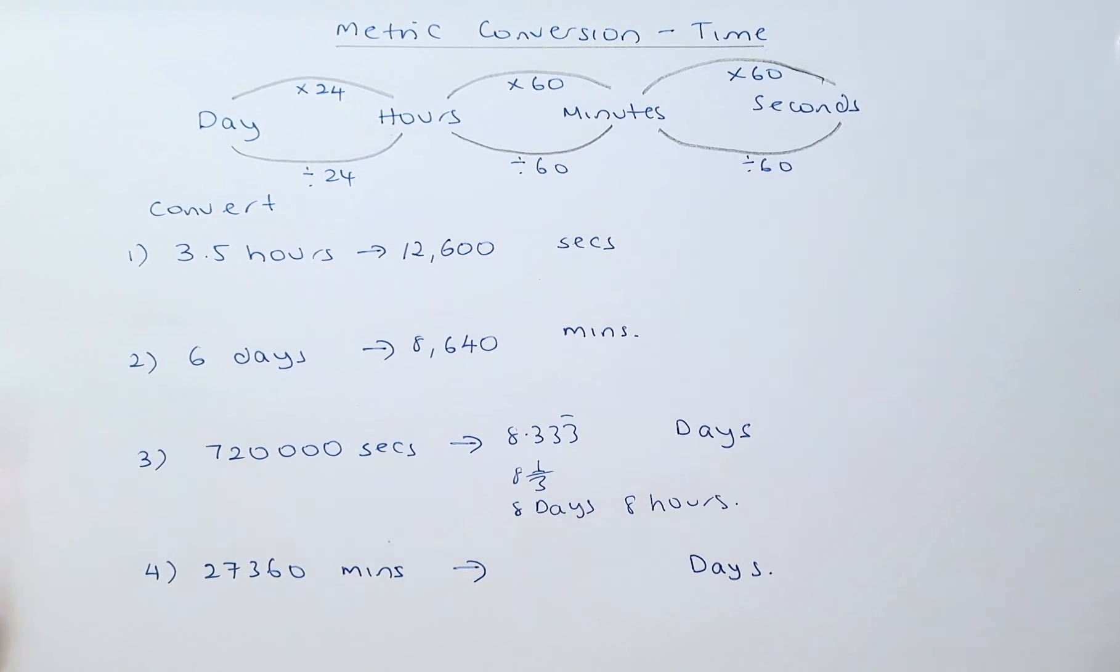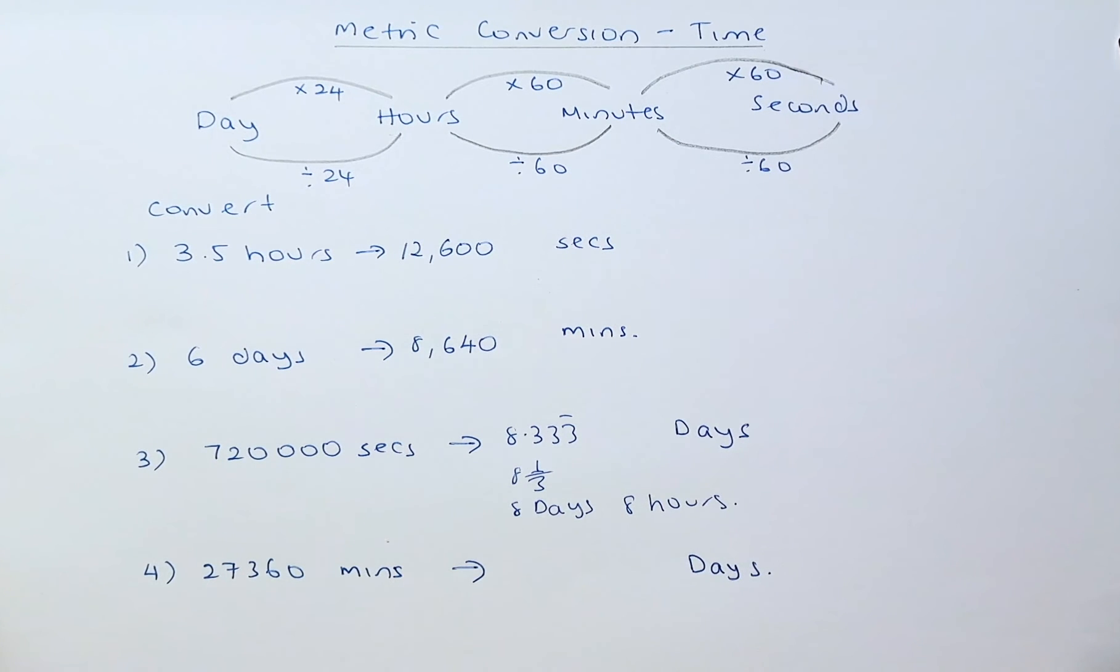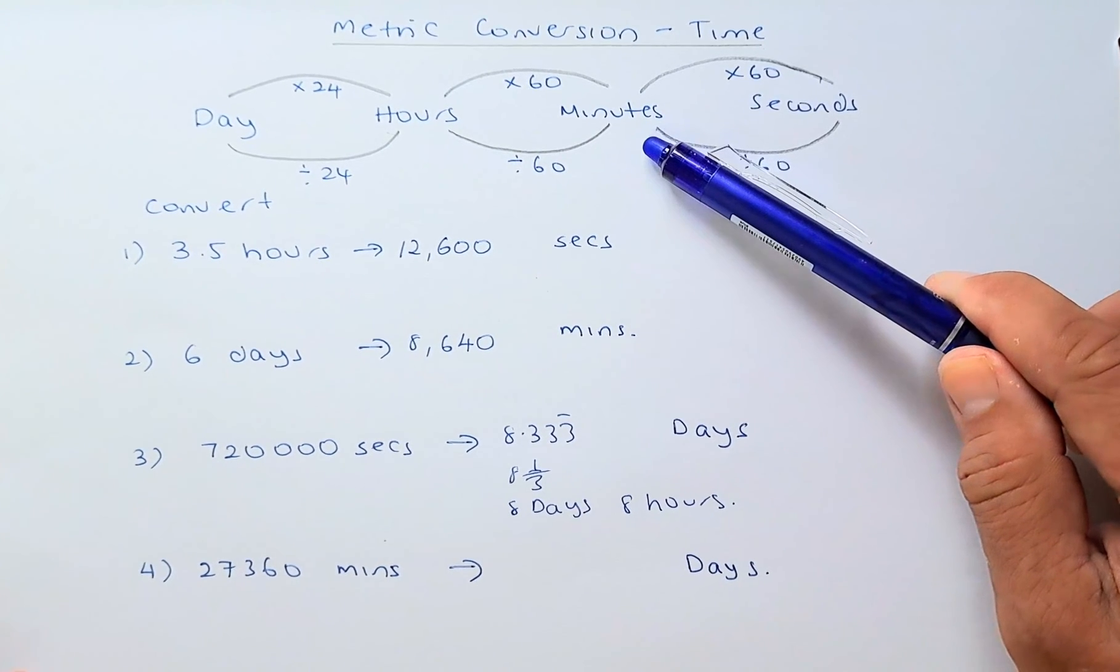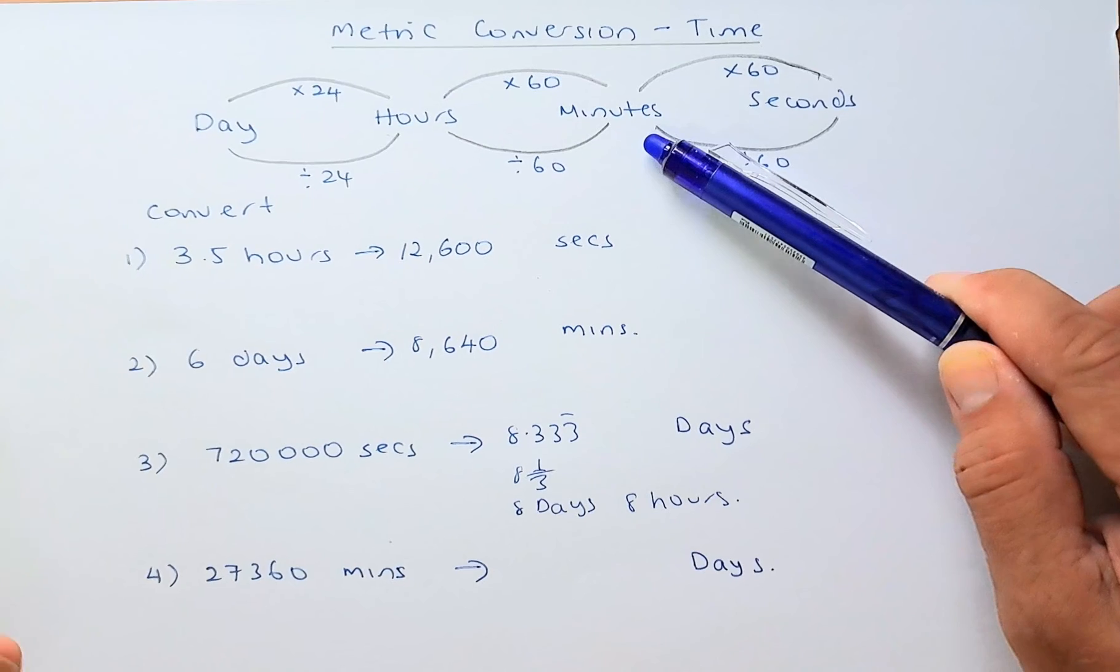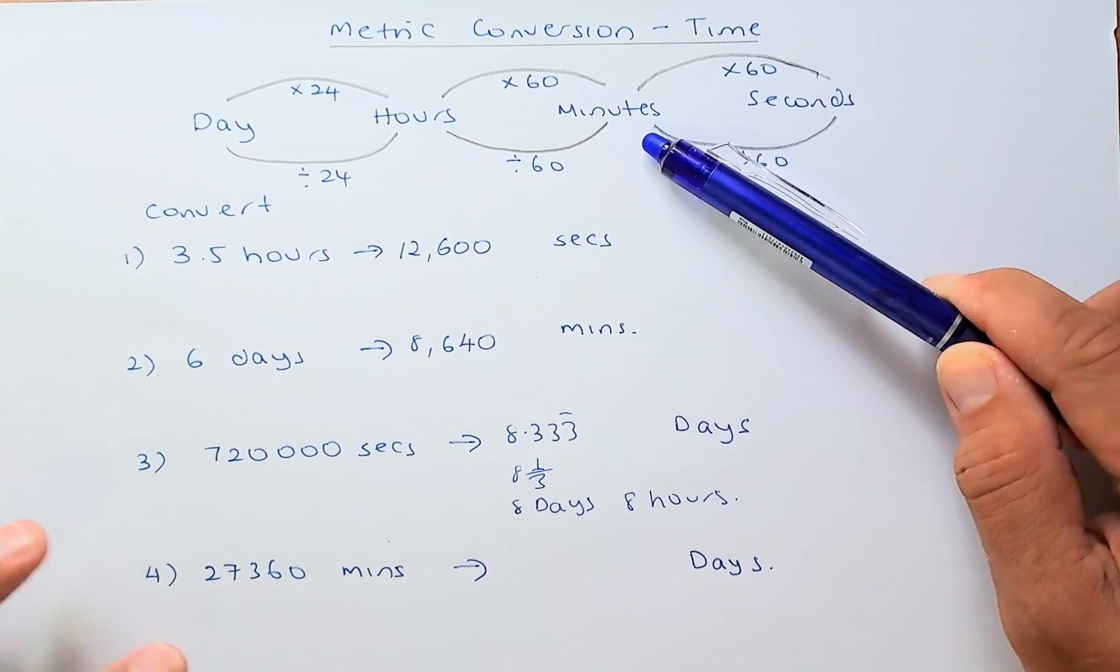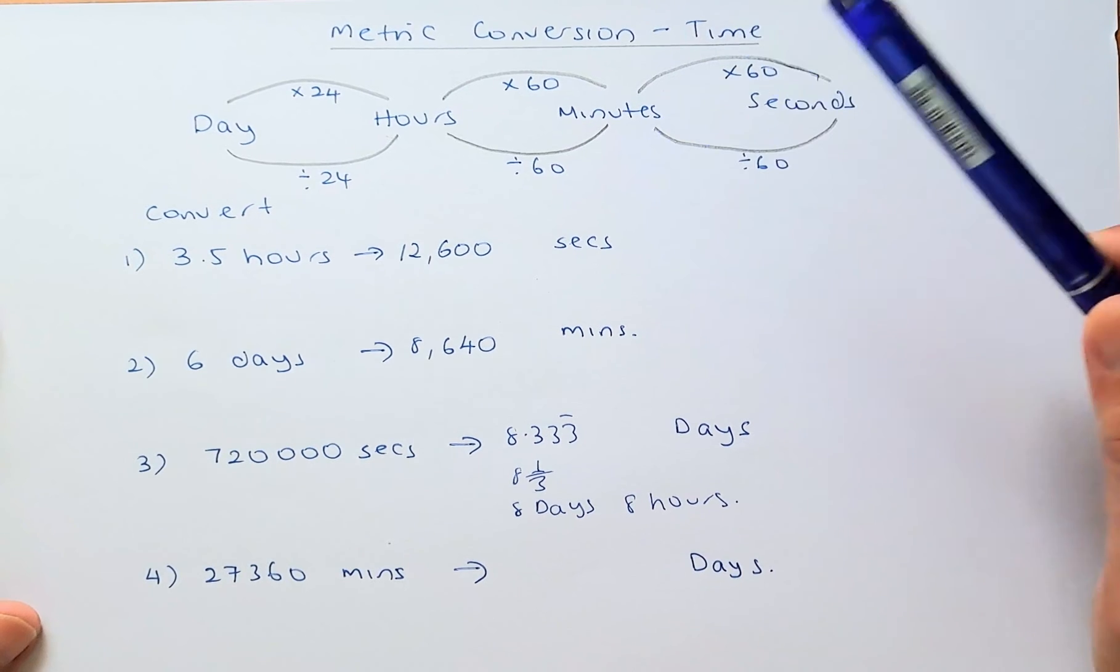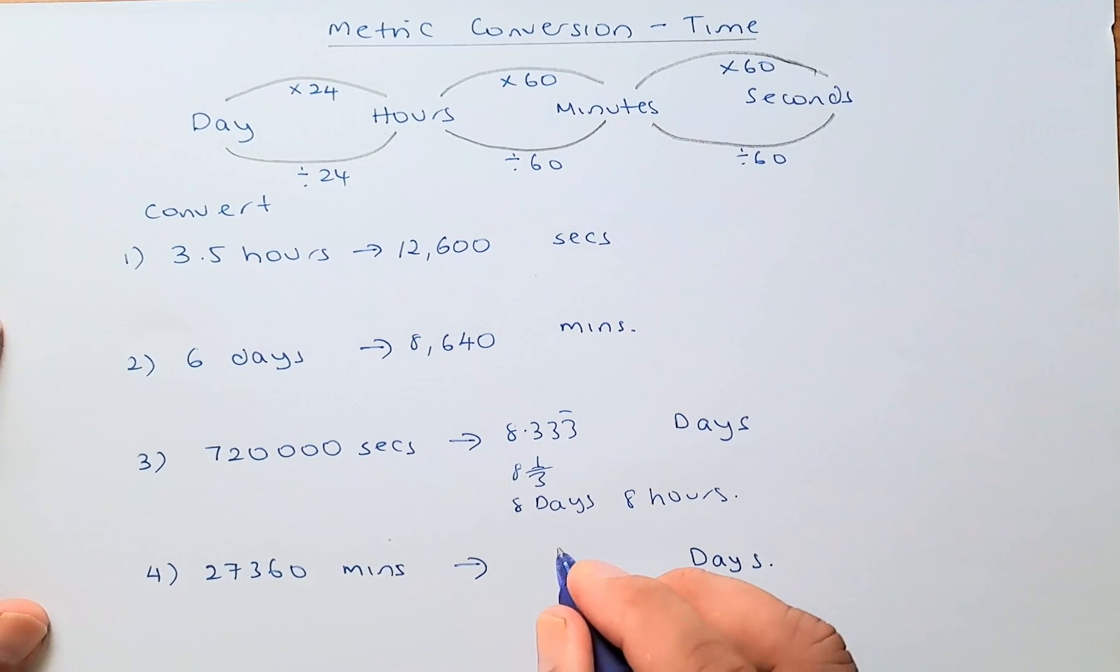Last but not least, we're going to do one more example. We are going to calculate 27,360 minutes to days. So we are here and we want to move to day. So what do you reckon you do? You just take 27,360 divided by 60 divided by 24 and the answer is going to be 19 days.